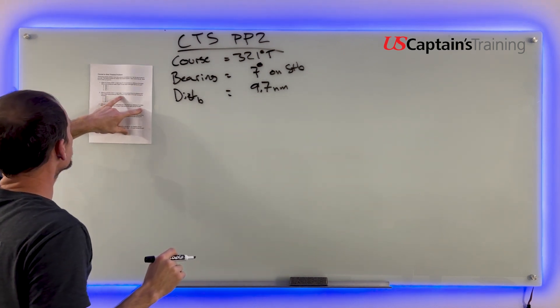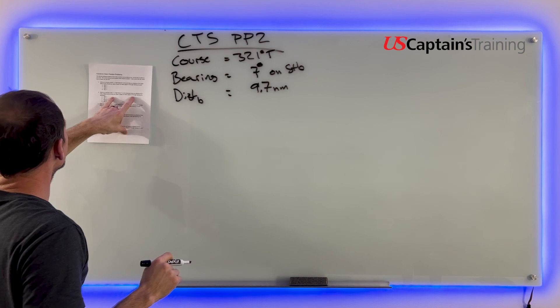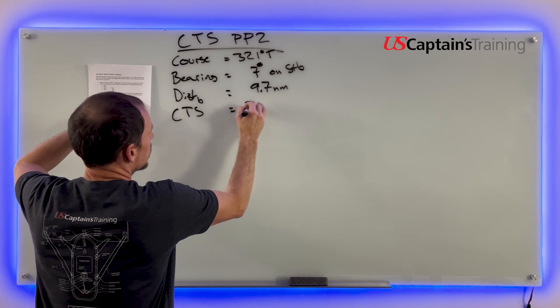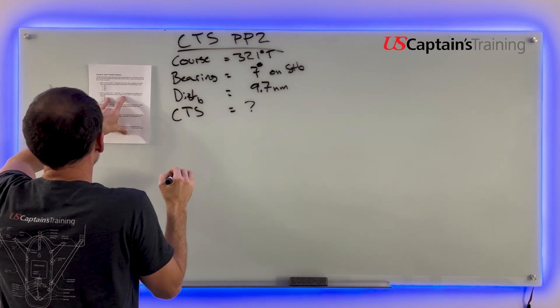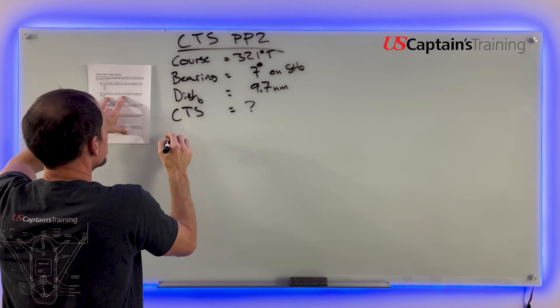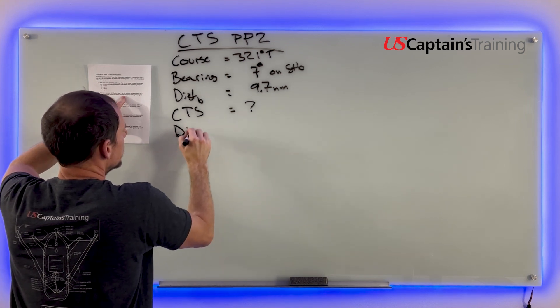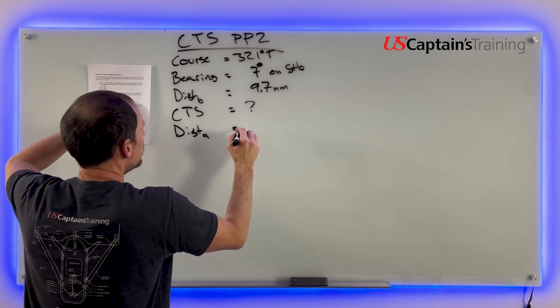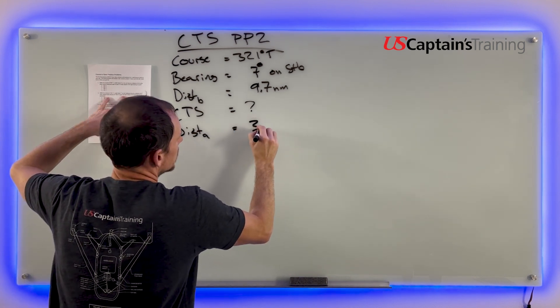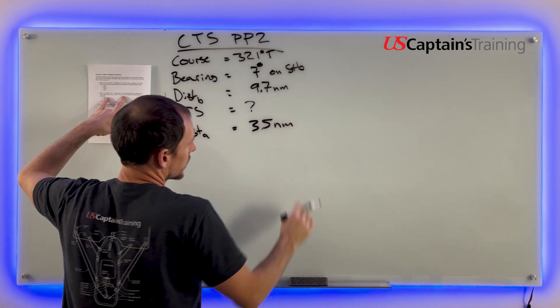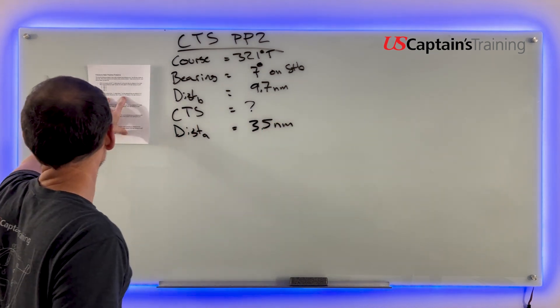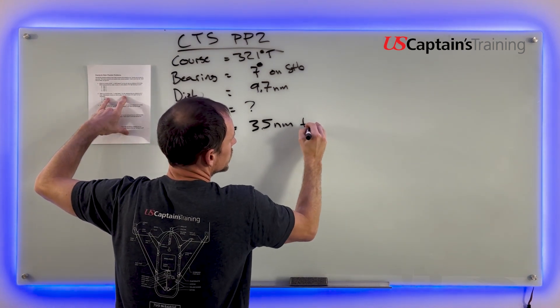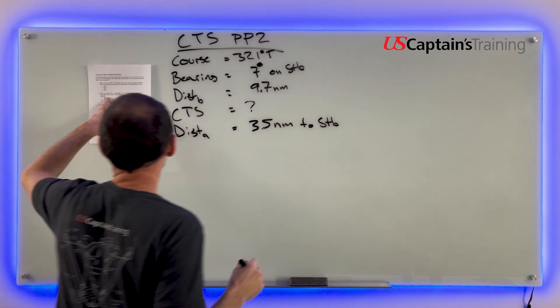What course should you steer to pass 3.5 miles abeam of the light, leaving it to starboard? So it wants to know course to steer. That was the question. And to pass 3.5 miles abeam, it gave us another distance abeam of 3.5 nautical miles, leaving it to starboard.